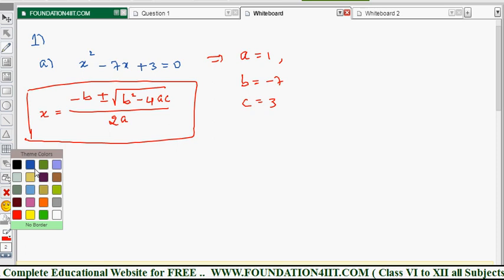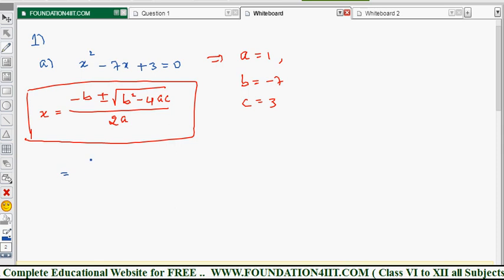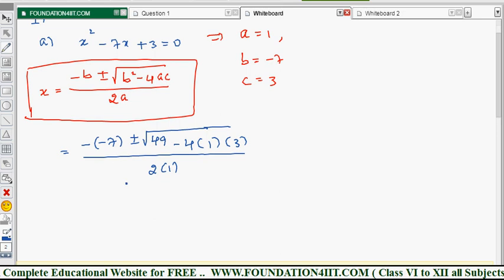In the problem we will simplify. Minus b, formula minus, and b value is minus 7, so minus of minus 7 plus or minus under root b square. Minus 7 whole squared is 49 because minus into minus is plus, right? Minus 4ac, 4 into a value is 1 and c value is 3. Overall divided by 2a, so 2 into a value is 1.